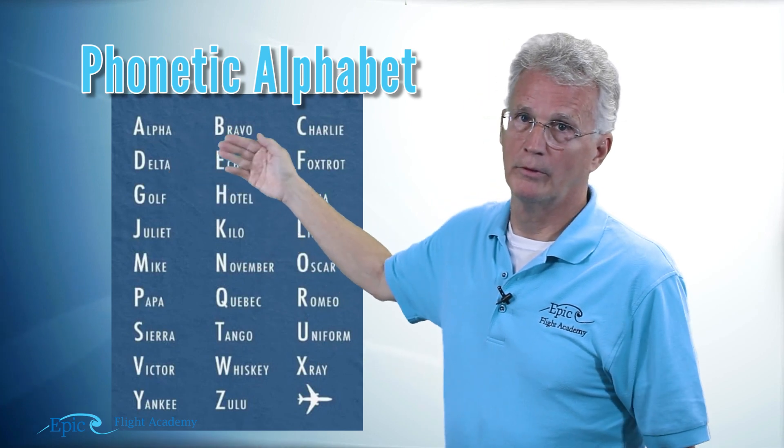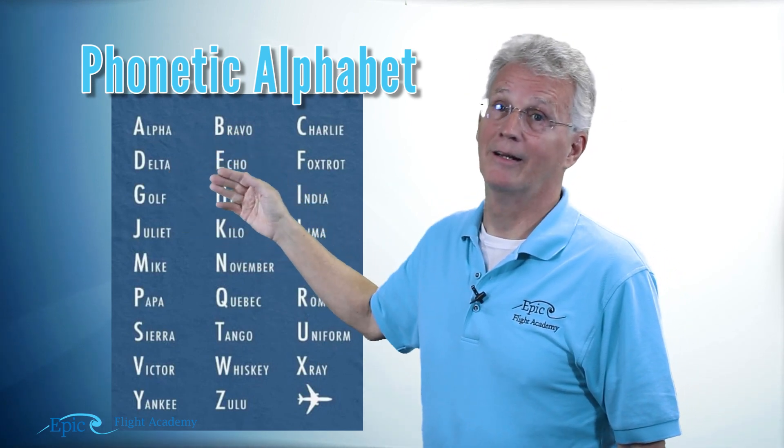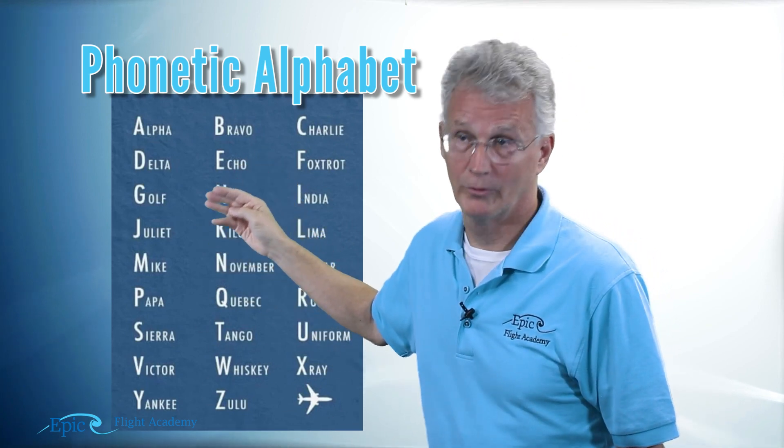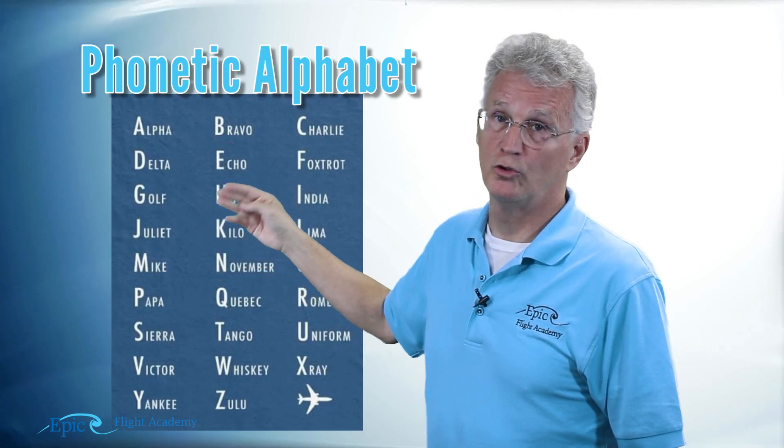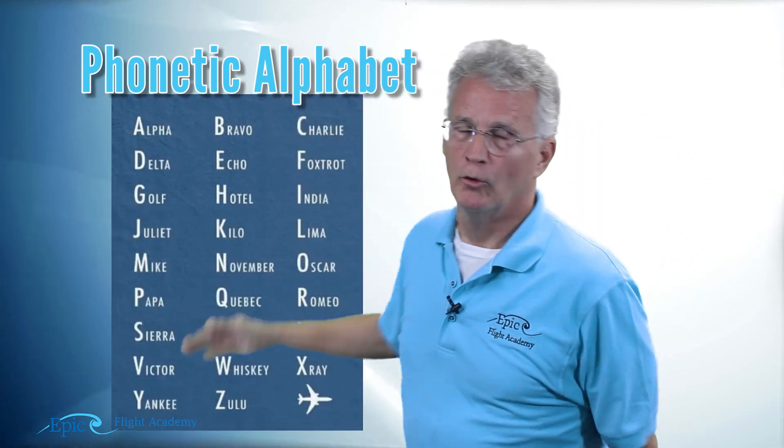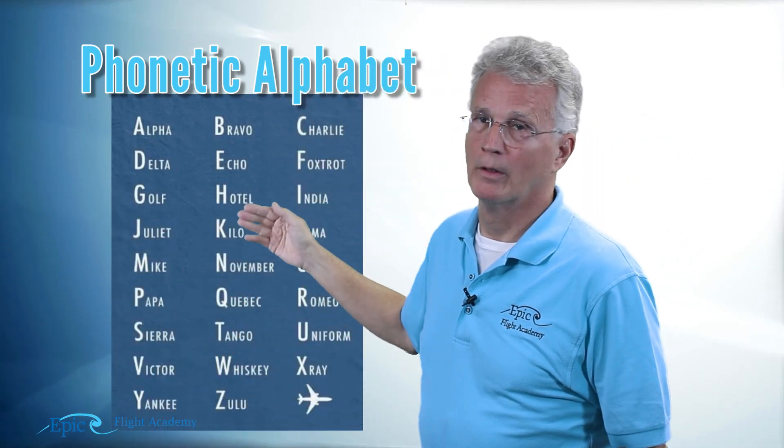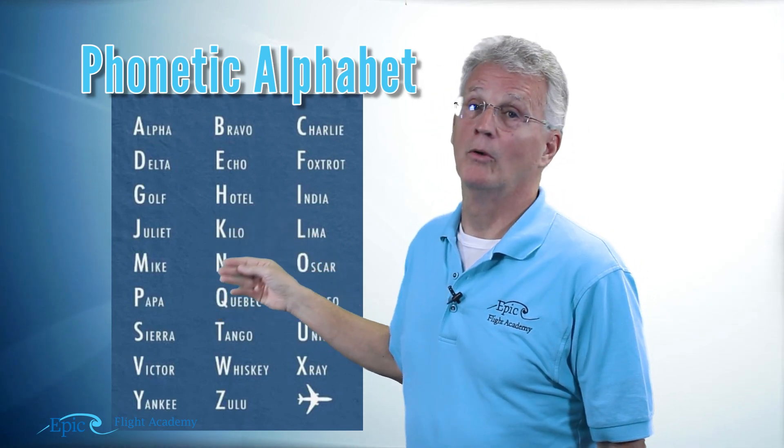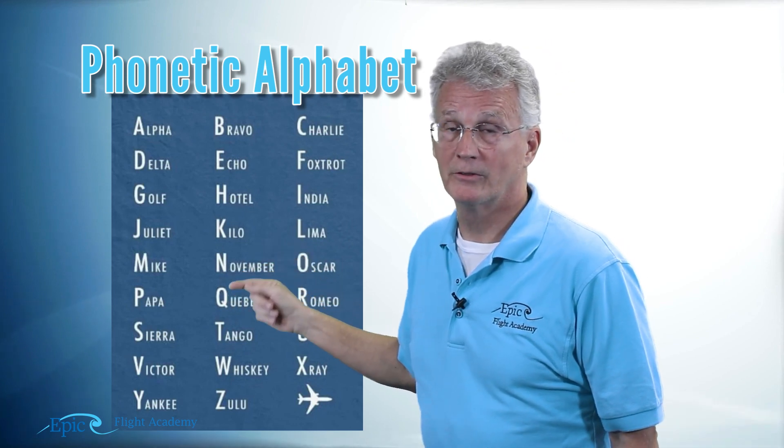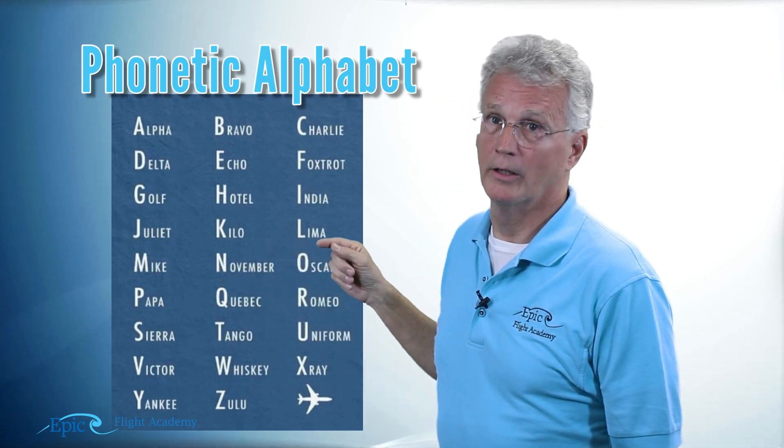So: Alpha, Bravo, Charlie, Delta, Echo, Foxtrot, Golf, Hotel, India, Juliet, Kilo, Lima, Mike, November, Oscar, Papa, Quebec, Romeo, Sierra, Tango, Uniform, Victor, Whiskey, X-ray, Yankee, and Zulu. That's the phonetic alphabet.